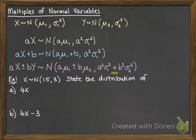Here's an example. We've got X following this normal distribution with a mean of 15 and variance of 3. We want to state the distribution of 4X. Since X is normal, we know 4X is also normally distributed. The mean will be 4 times 15 and the variance will be 4 squared times 3.